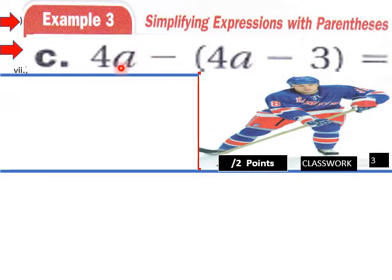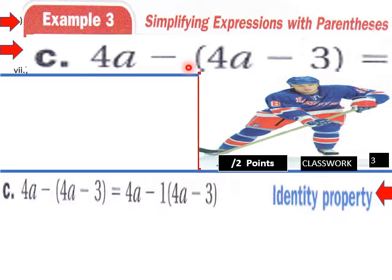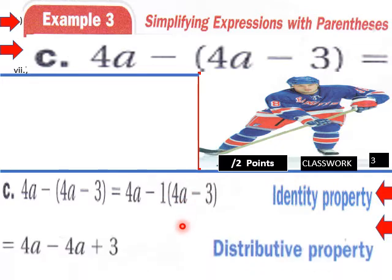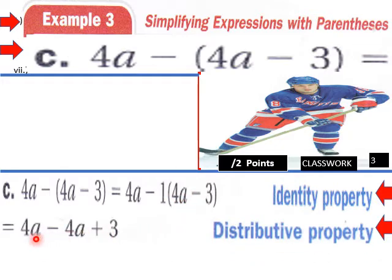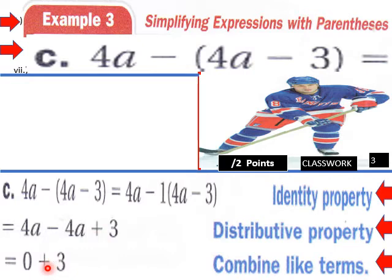Next we have 4a minus the quantity 4a minus 3. There is a negative 1 out front, so this becomes 4a minus 1 times the quantity 4a minus 3. This becomes 4a minus 4a plus 3. When you combine like terms, we have 0 plus 3, which simplifies to just 3. This expression equals 3.